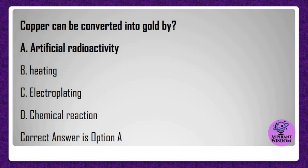Copper can be converted into gold by? A) Artificial radioactivity, B) Heating, C) Electroplating, D) Chemical reaction. Correct answer is option A.